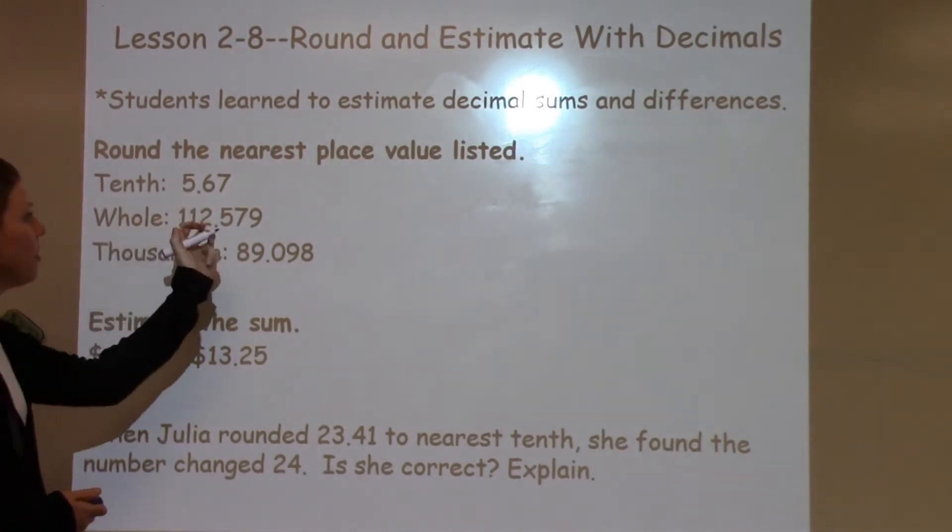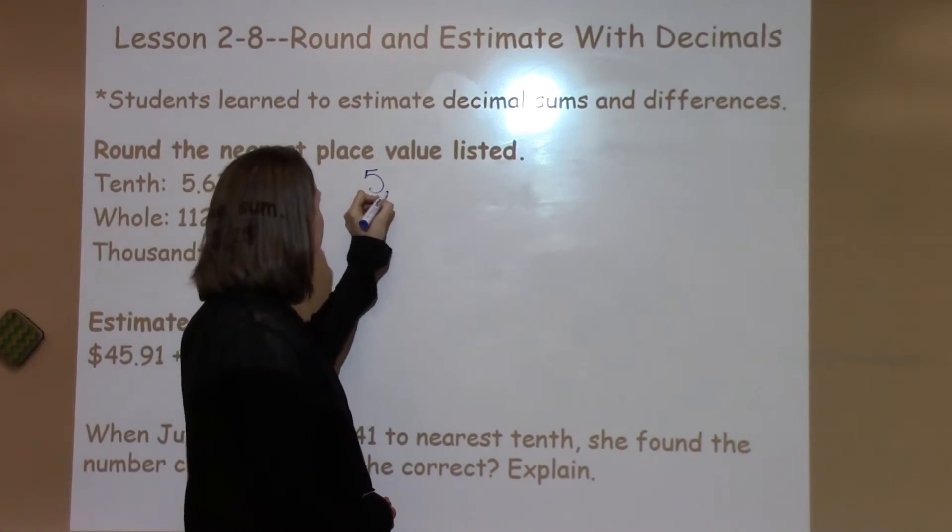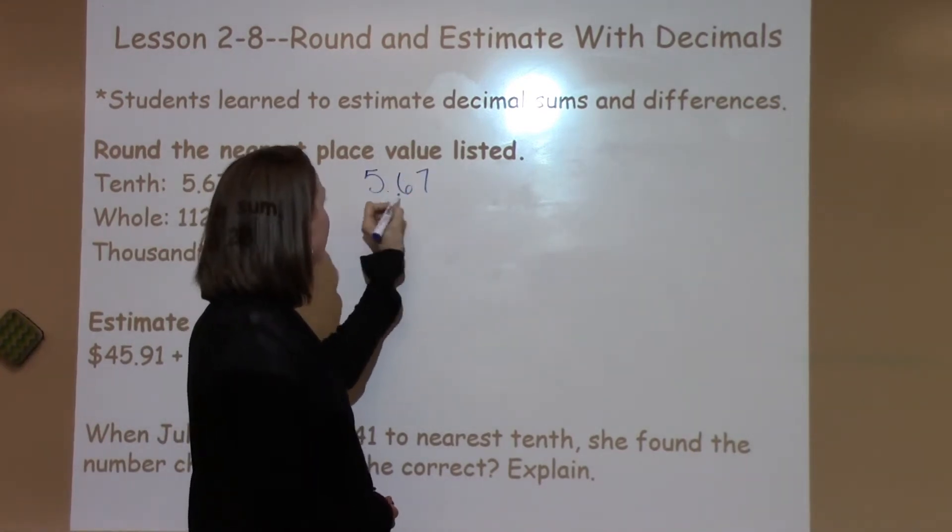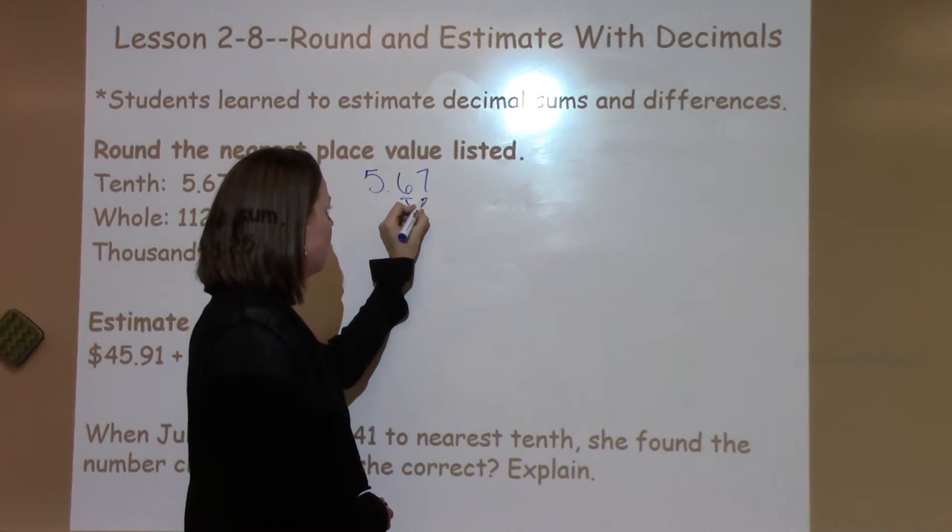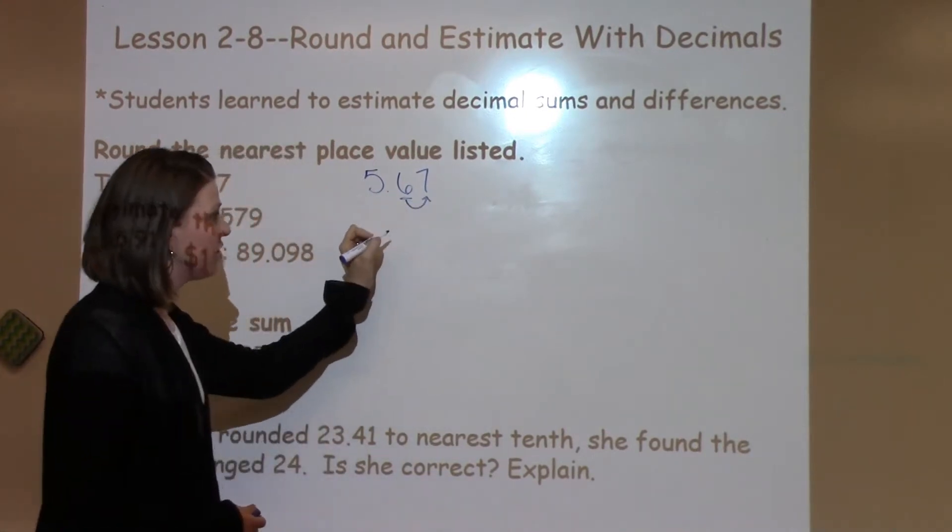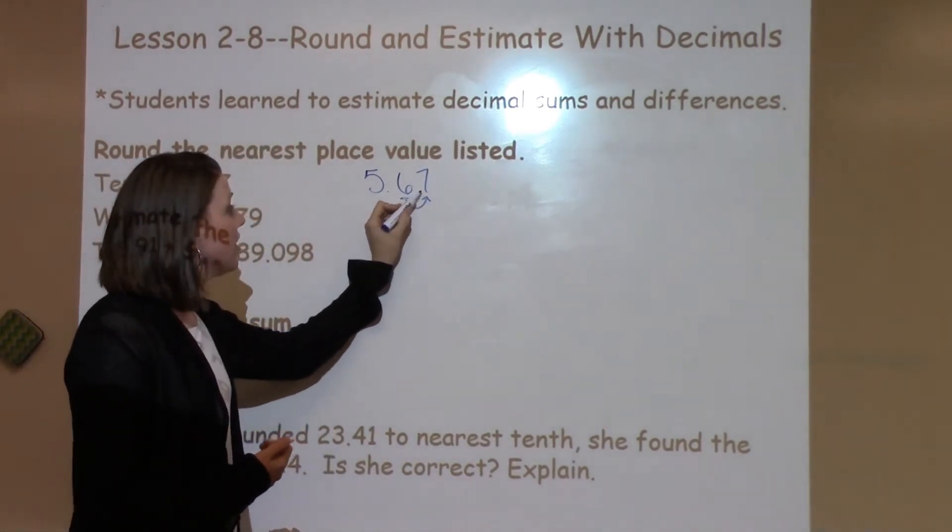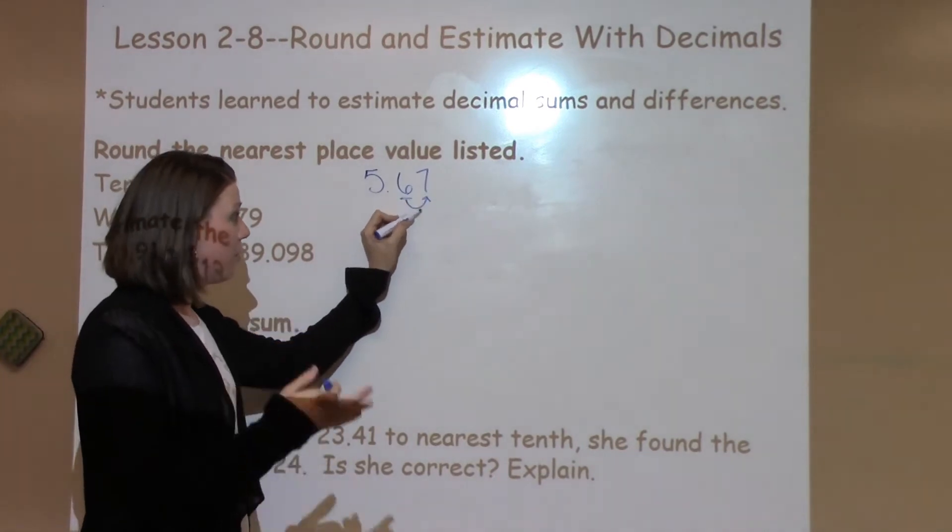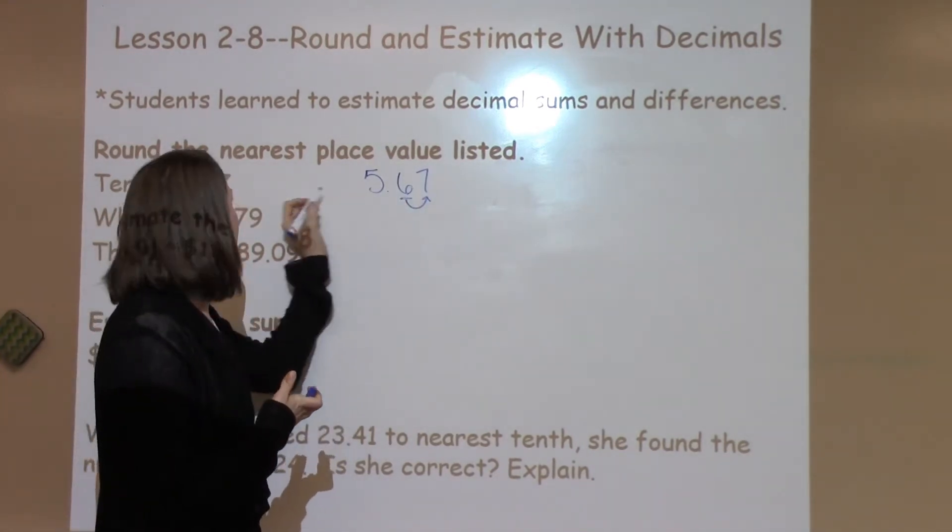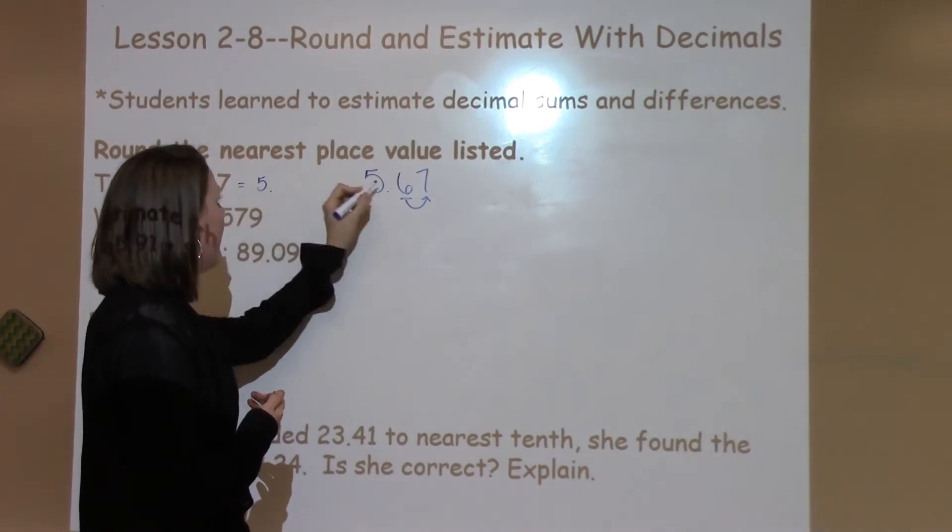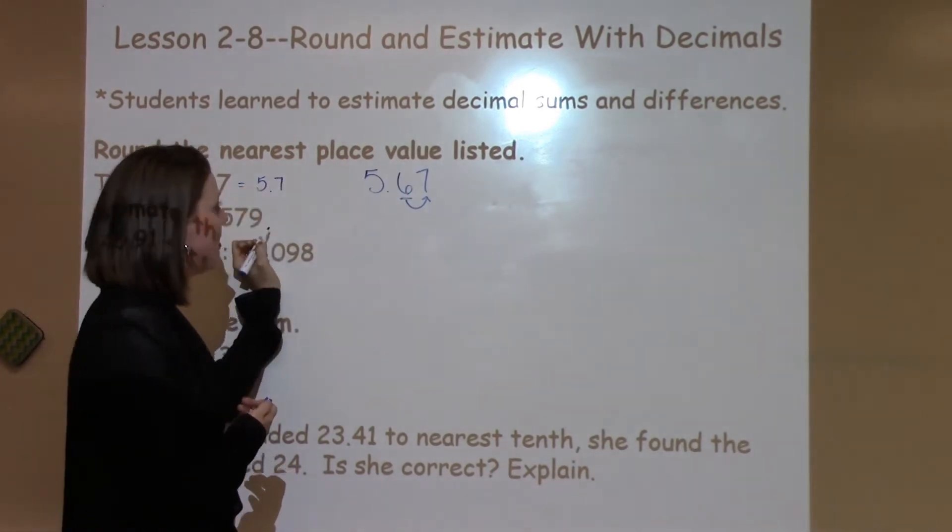Let's round to the nearest place value listed. We need to round to the tenth spot. I'm going to write this number down. I need to underline my tenth spot, and I always draw an arrow to the next one, to the neighbor next door, is what I tell my students. So look at the seven. It is a number that's going to push the number up, so we're going to round this number to 5.7.